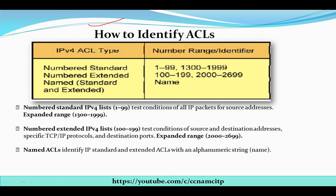Let's see how to identify ACLs by type and number range. For IPv4: numbered standard ACL uses ranges 1–99 or 1300–1999. Numbered extended ACL uses ranges 100–199 or 2000–2699. For named ACLs, we can assign any name we want to the access list. So standard is basically 1–99 (or 1–1999 expanded), and numbered extended is 100–199 (or 2000–2699).